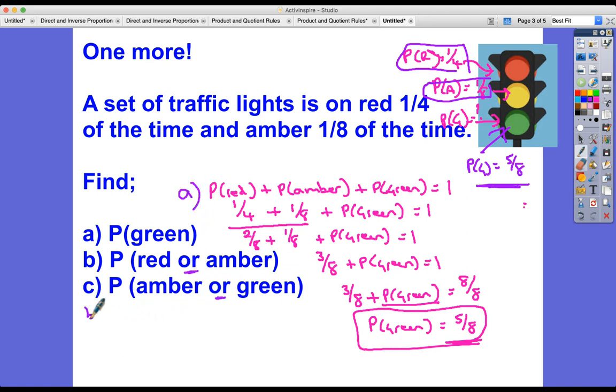Which is going to be one-quarter plus one-eighth. I've talked about making the denominators the same, so that's going to be two-eighths plus one-eighth. So collectively, the chance of a red or an amber is three-eighths.